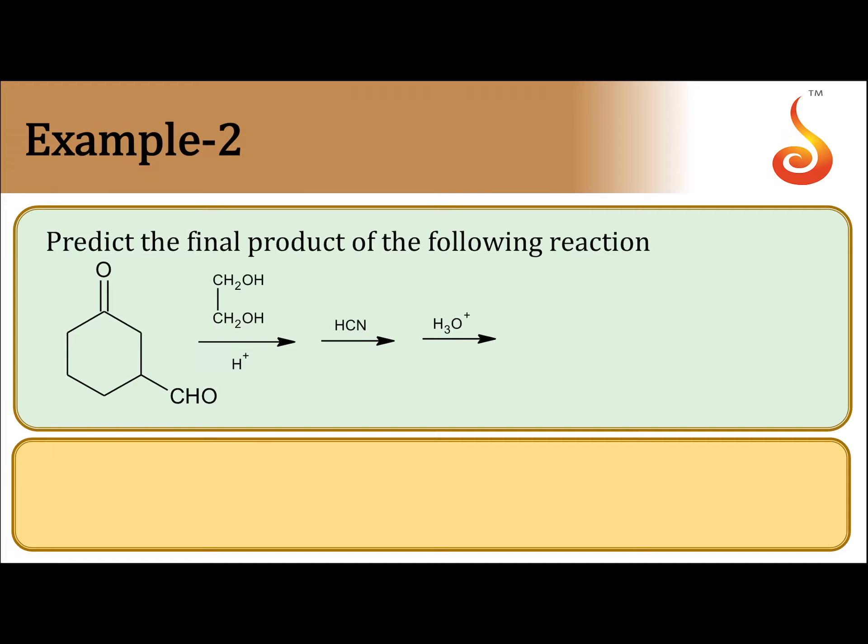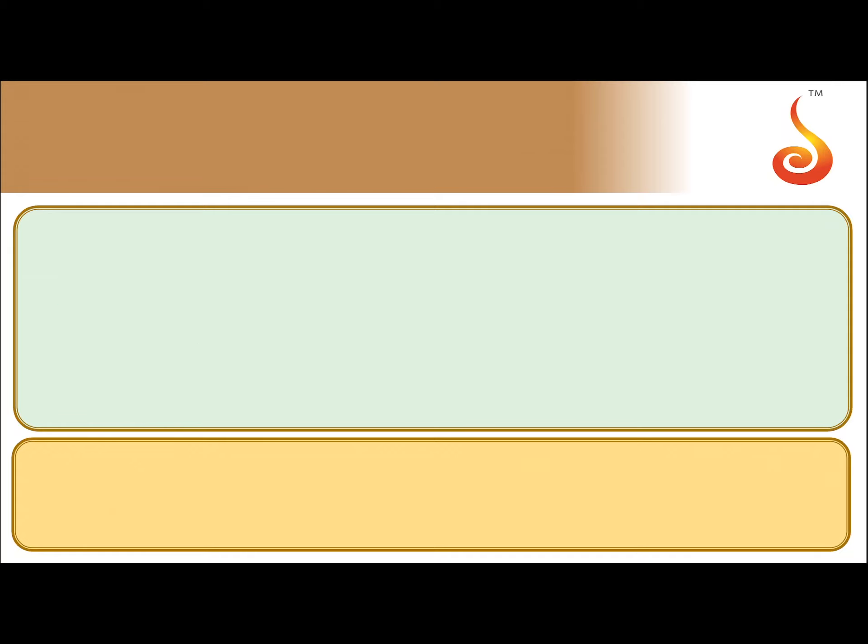Predict the final product in the following reaction. If you see the reactant, there is a ketone and aldehyde. It is treated with glycol and dry HCl. You will get a compound. The compound is treated with HCN followed by hydrolysis.